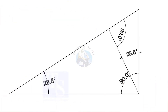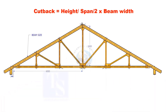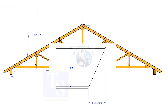Basically, the formula is based on the theory that opposite angles are equal. The cutback equals truss height divided by half span, multiplied by the actual width of the girder. Proportionate to the span and the height, the cutback for a 400mm wide beam is 133.3mm.